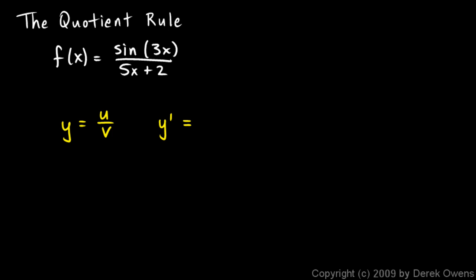We find dy/dx like this: the derivative of y is going to be v times the derivative of u, minus u times the derivative of v, all over v squared. That's actually a little bit tricky to remember because subtraction is not commutative — you can't mix these up.